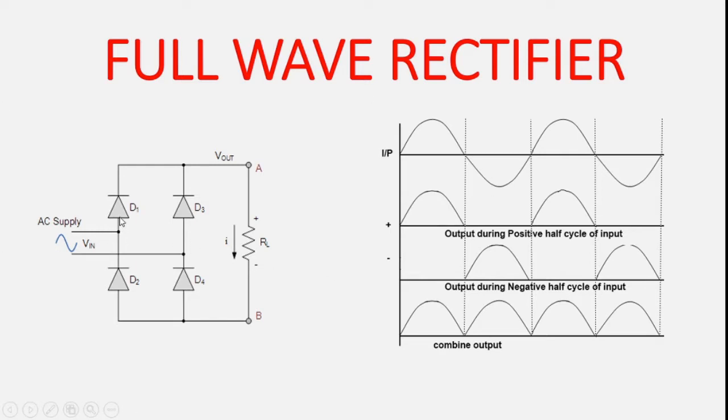This is plus. So you see D1 starts conducting. Anode is connected to the positive, so it starts conducting D1. Then through the load, D4, then minus. So I am just repeating: D1, load resistance, D4, and minus. So D1 and D4 will conduct first. At the next half cycle this will be minus.